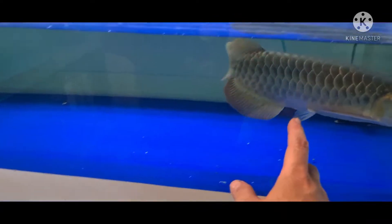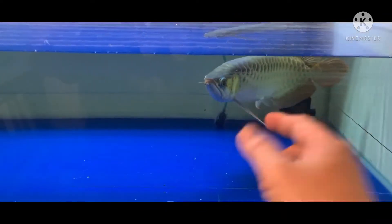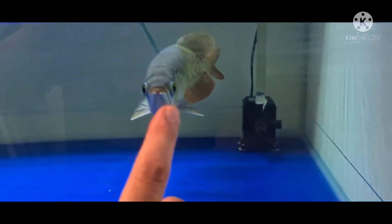Tipe-tipe arowana yang susah merah itu ya seperti ini. Kalian bisa lihat kenapa susah merah.